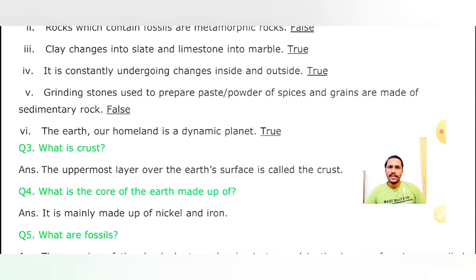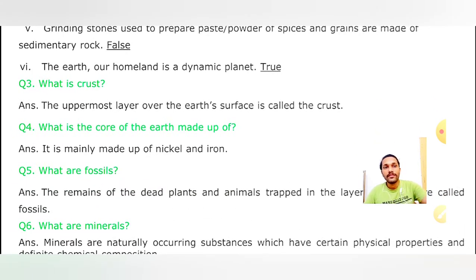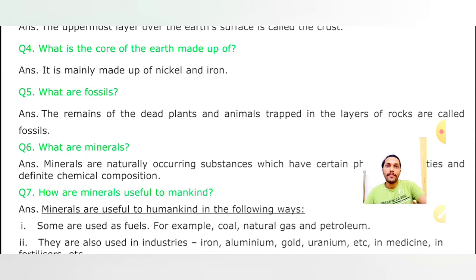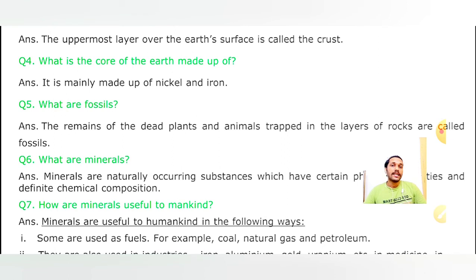Question 5: What are fossils? Fossils ki definition bahut baar padhai hai. Past remains of dead plants and animals - yaani ki jo hamare ped paudhe, janwar jo marke dab jaate hain, unke jo hamare saboot dekhne ko milte hain, wahi hamare fossils kehlaate hain. Jab hum extraction karte hain toh inse hamare coal, petroleum, kerosene, diesel banta hai. The remains of dead plants and animals trapped in the layers of rocks are called fossils.